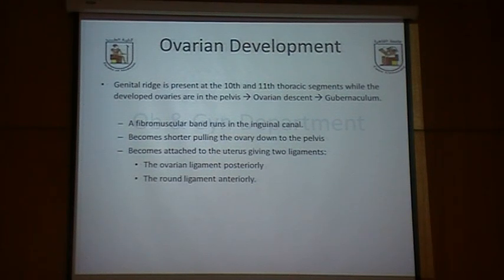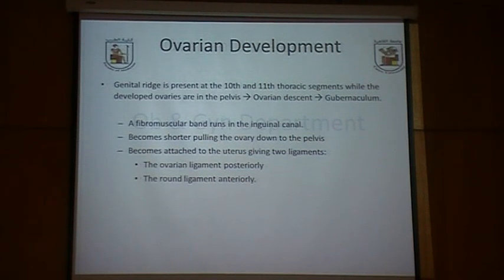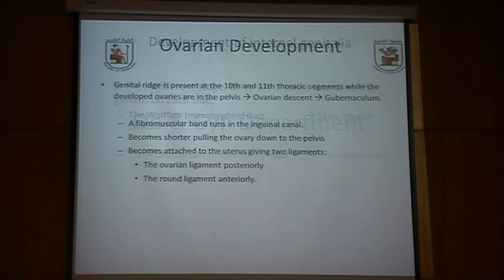Regarding ovarian development, the genital ridge is present at the 10th to 11th thoracic segment while the developed ovaries are in the pelvis. The ovaries descend by the gubernaculum until they reach the lower part of the pelvis. The gubernaculum is a fibromuscular band which runs in the inguinal canal, becomes shorter, pulling the ovary down into the pelvis, and becomes attached to the uterus, giving two ligaments: the ovarian ligament posteriorly and the round ligament anteriorly.